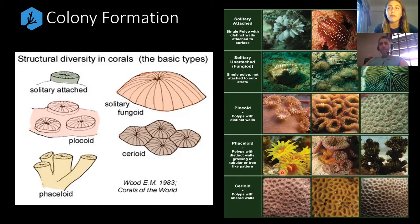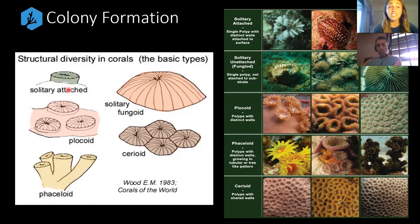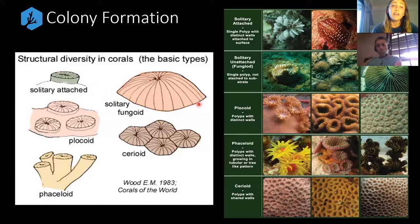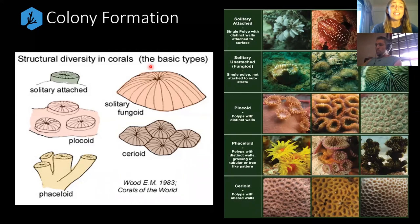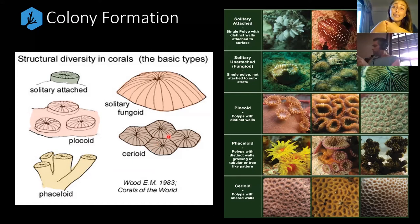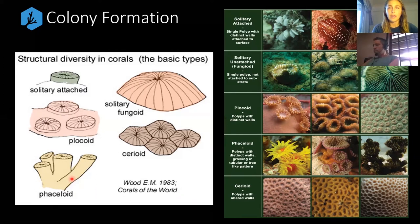In terms of colony formation, corals grow in many different forms. We have solitary attached — a single individual coralite that remains attached and doesn't bud off. Some corals are not colonial, and we'll see examples of that. We have the solitary fungoid, again a singular polyp but not attached — often called mushroom corals, and some of my favorites. Then we've got the placoid, with very distinct walls and separate polyps and a nice coenosteum. We've got astroid, where polyps are head to head, and then basaloid, which is quite tubular in nature.